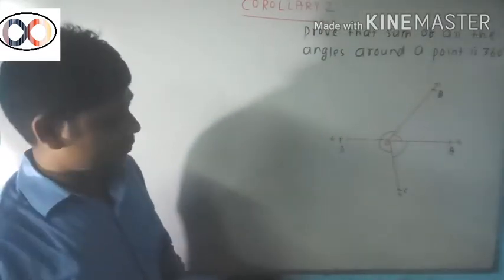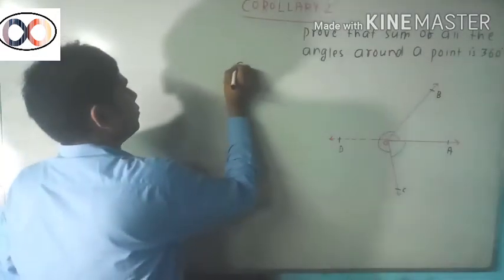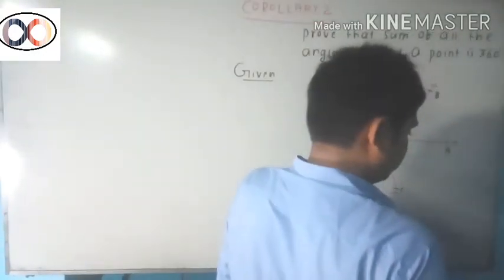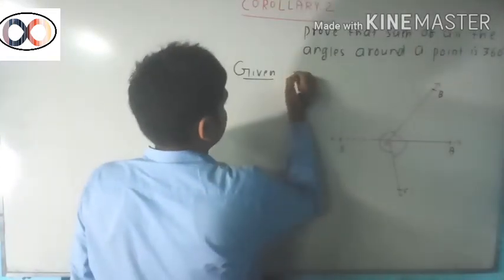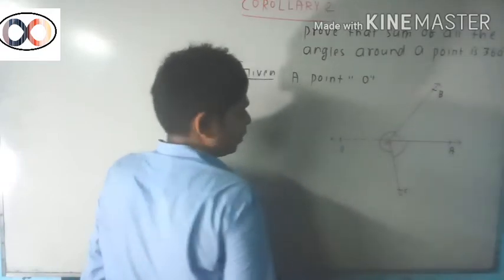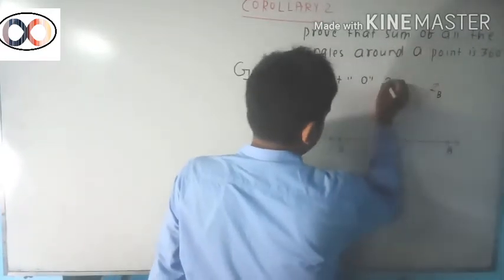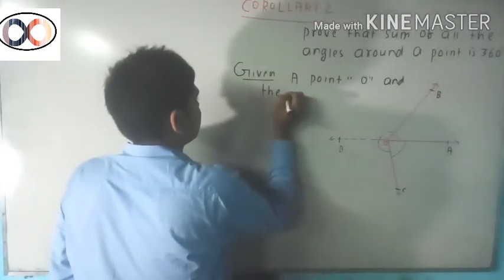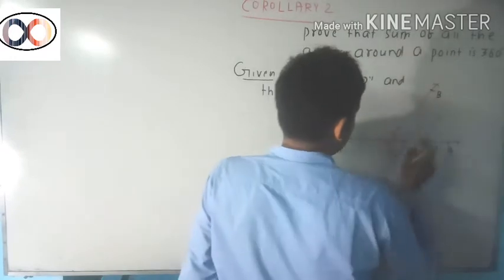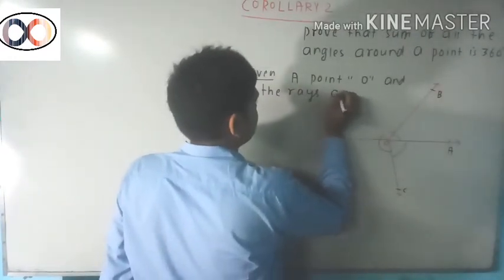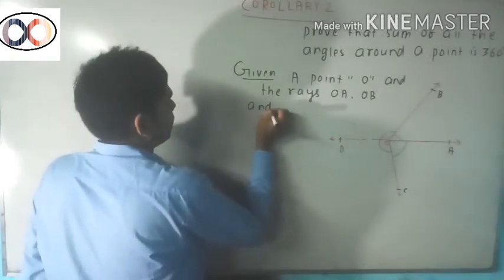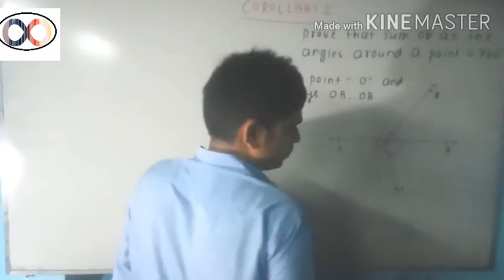Given: O is a point, and rays OA, OB, and OC make angles around point O.